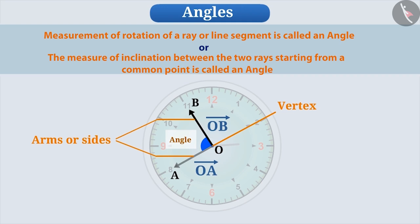Using the vertex, we can give a name to the angle. Like here, the vertex is O, so we can name this angle as angle O. Here, this sign shows the angle.